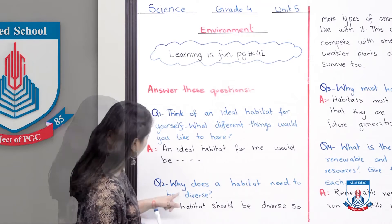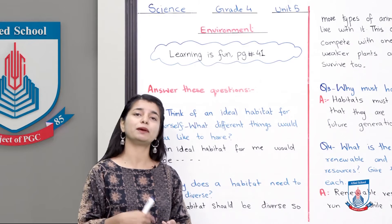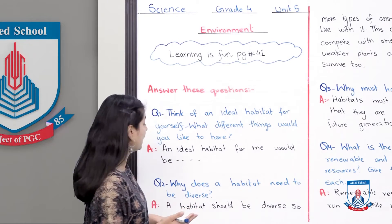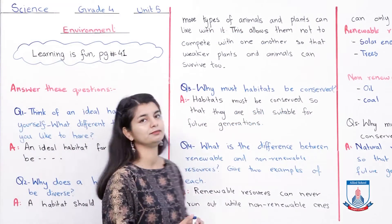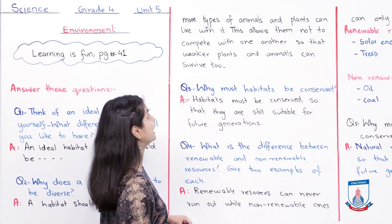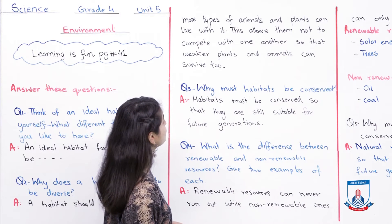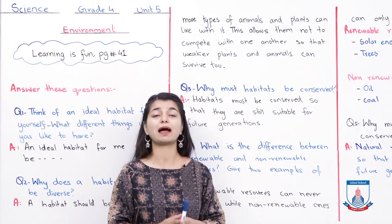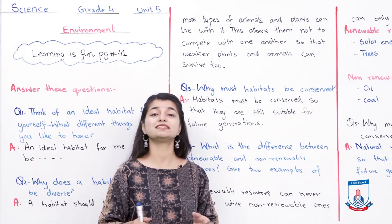Question number two: Why does a habitat need to be diverse? This is rather simple — it's a very direct answer. A habitat should be diverse so that more types of animals and plants can live within it. This allows them not to compete with one another, so that weaker plants and animals can survive. They are saying that if the habitat is diverse, they can live within it and they don't compete with one another.